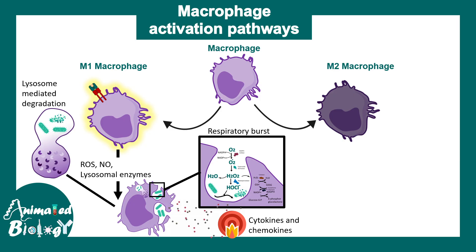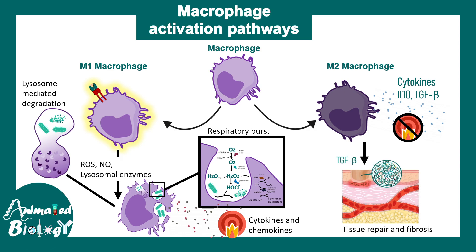In contrast, M2 macrophages secrete cytokines which are anti-inflammatory in nature, so overall in the context of immune modulation their job is totally reversed compared to M1 macrophages. They also secrete TGF-beta which acts as a tissue repair and fibrosis modulator. So M2 macrophages have a lot of function in terms of wound healing and tissue repair, and they are also known in the context of fibrosis.